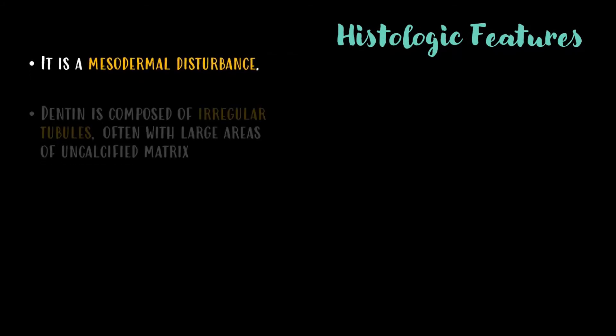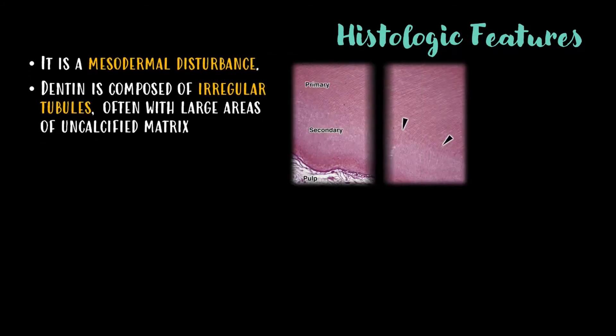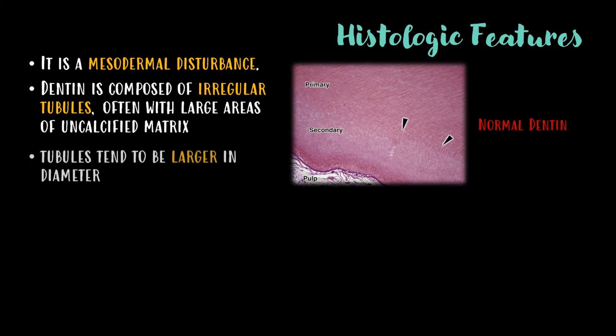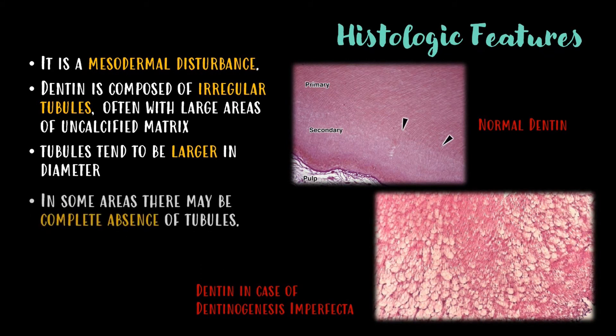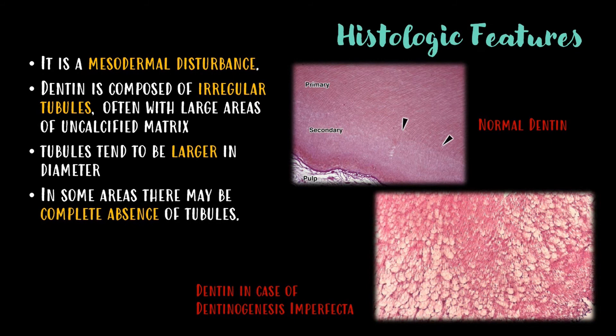Coming to the histological features, it is a mesodermal disturbance and dentin is composed of irregular tubules, often with large areas of uncalcified matrix. Tubules tend to be larger in diameter and in some areas there may be complete absence of tubules. Cellular inclusions are also common.